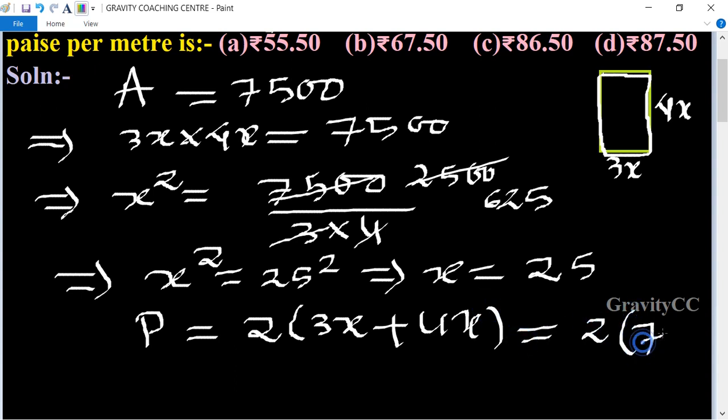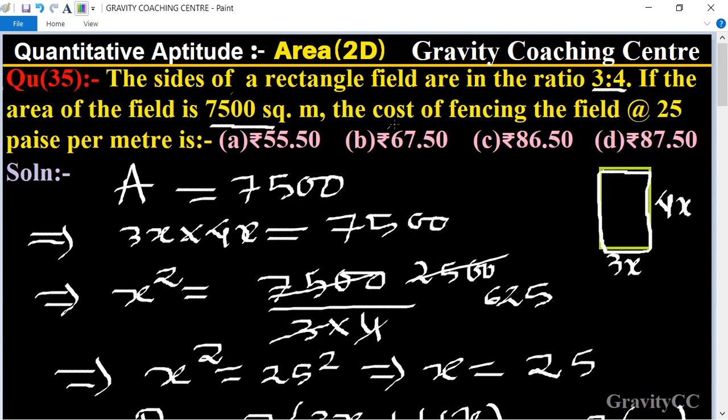3x plus 4x equals 7x. Perimeter equals 2 times 7x, which is 14x. That equals 14 times 25, which is 350. So the perimeter of the field is 350 meters.